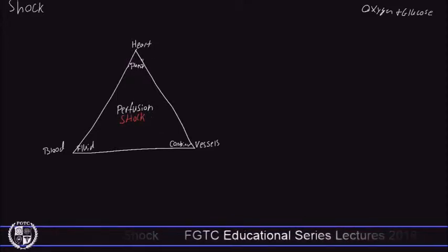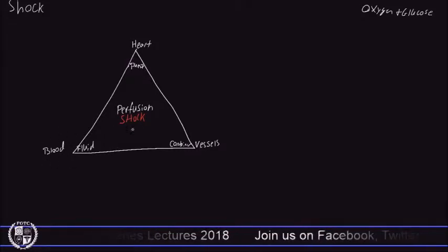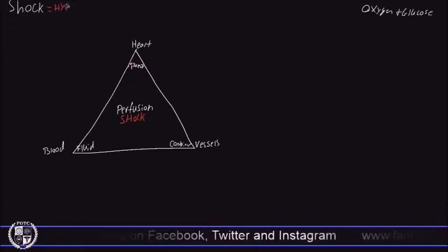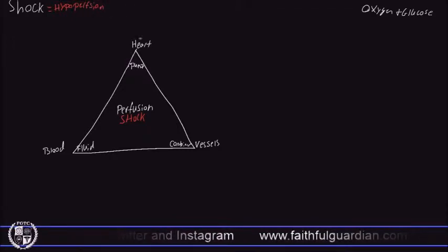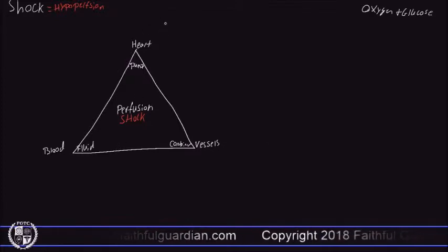If I have something wrong with my heart I can be going into shock if I do not have adequate perfusion. If I have something wrong with my blood — say I have too little blood — then I can be in a state of hypoperfusion, which is known as shock. Shock equals hypoperfusion, and hypo is a root word meaning low. So we have our heart, our blood, and our vessels.